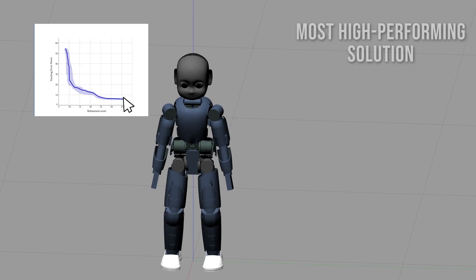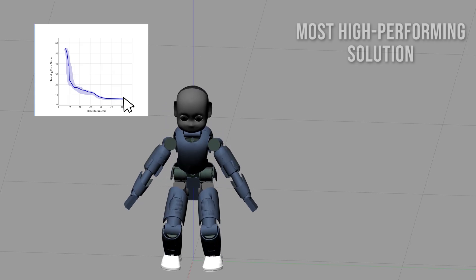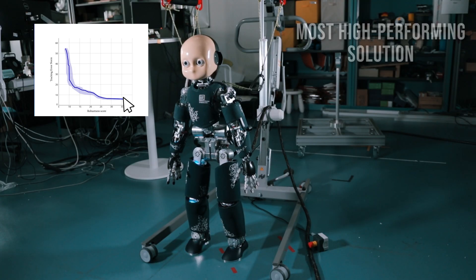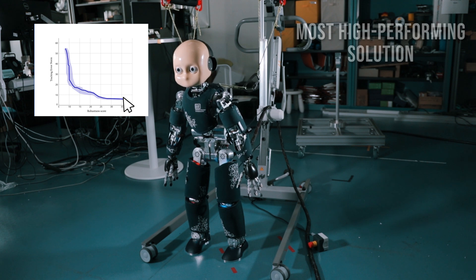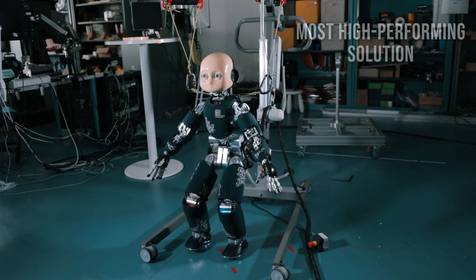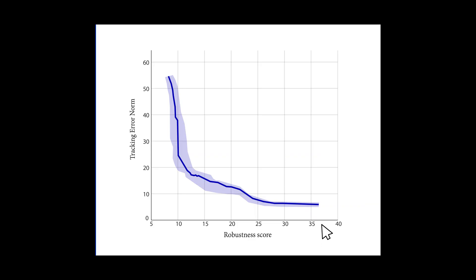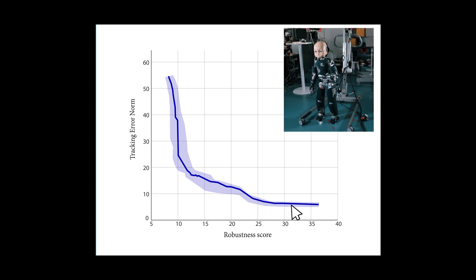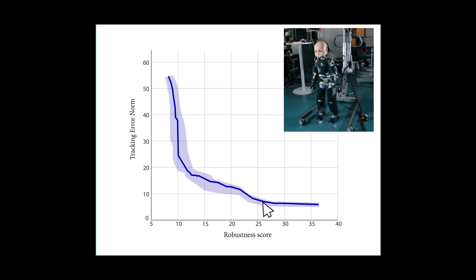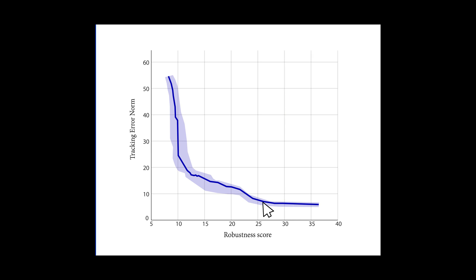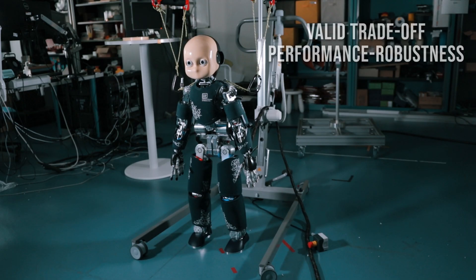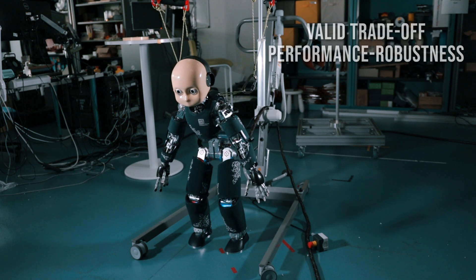The most high-performing solution instead works well in simulation, but when we transfer it onto the real robot, the robot falls. So we have to find solutions that are less high-performing but more robust. We pick this solution, but the robot still falls. This other solution, and the robot still falls. And finally this solution is a valid trade-off between performance and robustness that can be transferred onto the real robot.